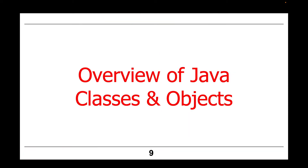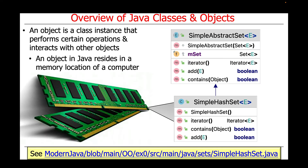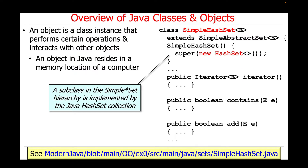So let's start by talking about Java classes and objects. An object is a class instance that performs certain operations and interacts with other objects. You can think of a class as something like a cookie cutter that's used to produce cookies, which are the objects in this context. An object in Java resides in a memory location of a computer.